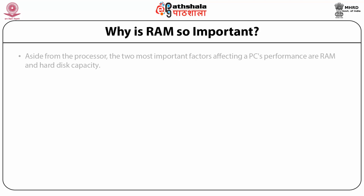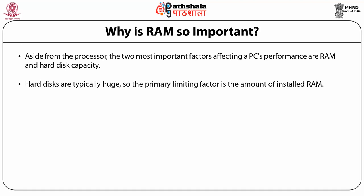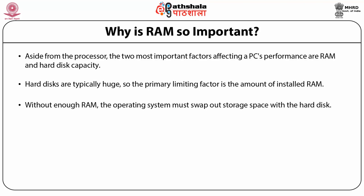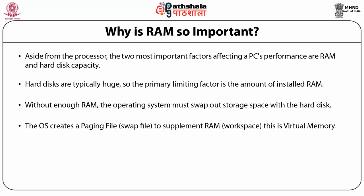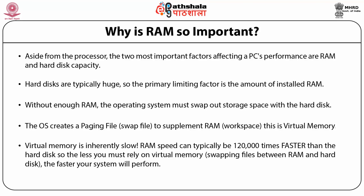RAM is critically important: aside from the processor, the two most important factors affecting PC performance are RAM and hard disk capacity. Without enough RAM, the operating system must swap storage space with the hard disk using a paging file called a swap file — this is called virtual memory. Virtual memory is inherently slow; RAM can be roughly 20,000 times faster than the hard disk. The less you must rely on virtual memory, the faster your system will perform.